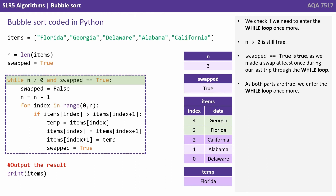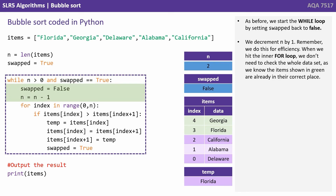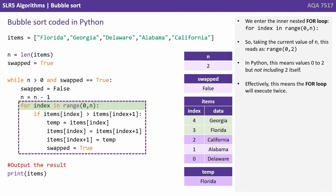We check if we need to enter the while loop. n is greater than 0 is still true. Swapped equals true is true, as we made a swap at least once during our last trip through the while loop. Both parts are true, so we enter the while loop once more. As before, we start by setting swap back to false and decrement n by 1. When we hit the inner for loop, we don't need to check the whole data set, as we know the two items shown in green are already in their correct place. We enter the inner nested for loop, and this time it reads from range 0 to 2, so we're going to go through the inner for loop twice.